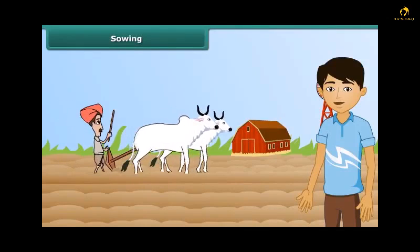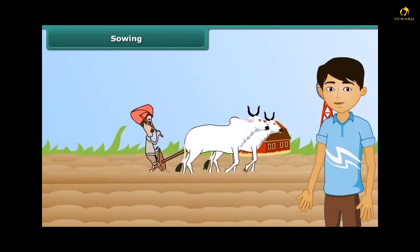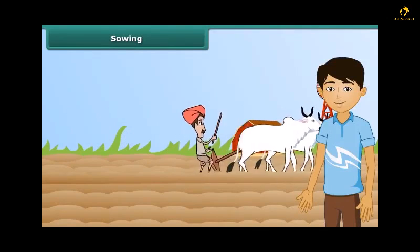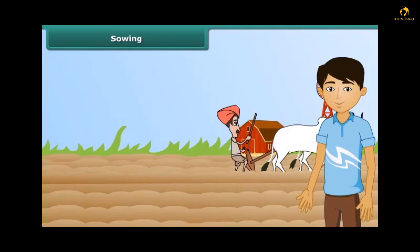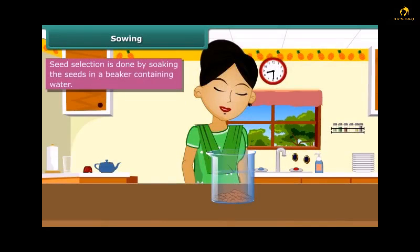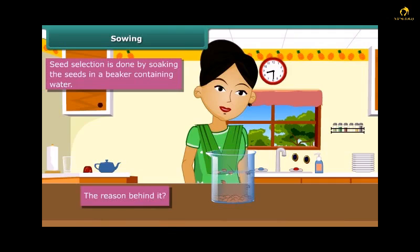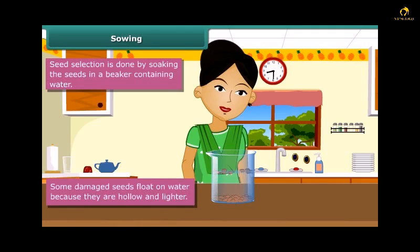Once plowing is done, the next step is sowing. Before sowing, farmers select good quality seeds to get high yields. Have you ever noticed seeds being placed in a vessel with water? Some seeds start to float because damaged seeds are hollow and hence lighter. This is a good method for separating good, healthy seeds from the damaged ones.